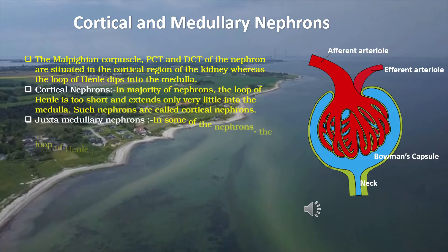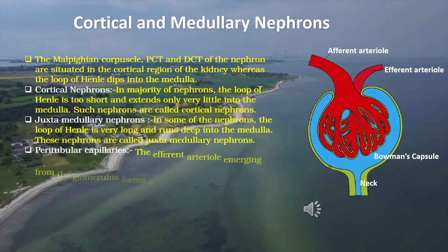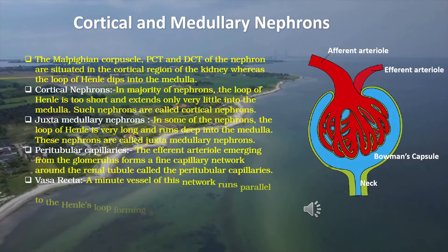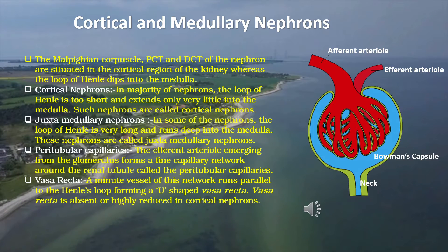The Malpighian corpuscle, PCT, and DCT of the nephron are situated in the cortical region of the kidney, whereas the loop of Henle dips into the medulla. In cortical nephrons, the loop of Henle is short and extends only a little into the medulla. In juxtamedullary nephrons, the loop of Henle is very long and runs deep into the medulla. The efferent arteriole forms peritubular capillaries around the renal tubule. A minute vessel of this network runs parallel to Henle's loop forming a U-shaped vasa recta, which is absent or reduced in cortical nephrons.